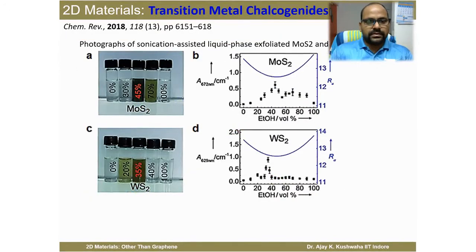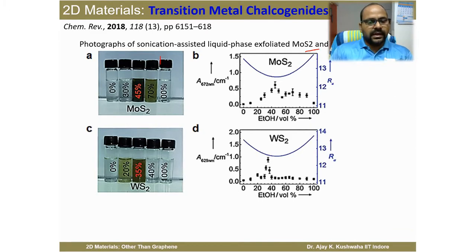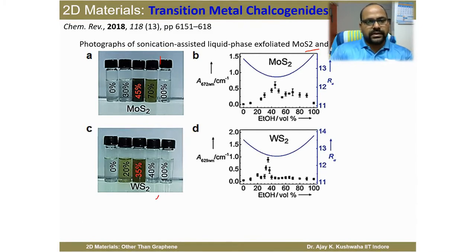One study demonstrated the dispersion of MoS₂ and WS₂ in a water-ethanol mixed solution. Results showed that at 45% ethanol, the solution is able to disperse MoS₂ particles very well, giving the highest absorption. For WS₂, 35% ethanol solution is sufficient to get the best dispersion, also giving the highest absorption intensity at that concentration.